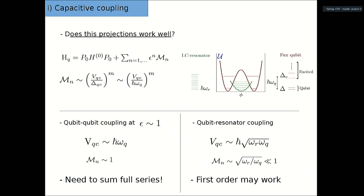For the qubit-resonator case this is not so bad, because you have the square root of one qubit and the resonator, but this is much smaller than the difference between the qubit subspace and higher excited states — assuming large anharmonicity, as can be the case for three-Josephson-junction qubits.